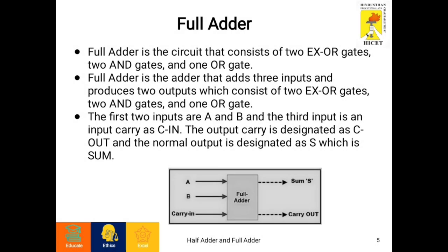Now let's see what a full adder is. A full adder is an extension of the half adder. It takes three inputs — A, B, and carry-in (C in) — and produces two outputs: the sum S and the carry-out C.